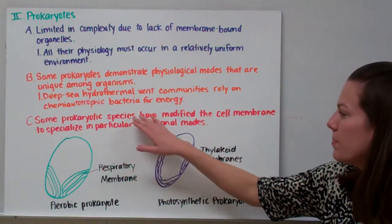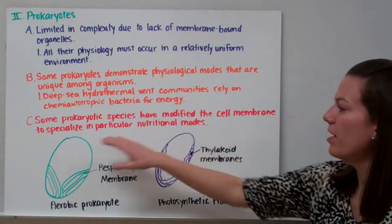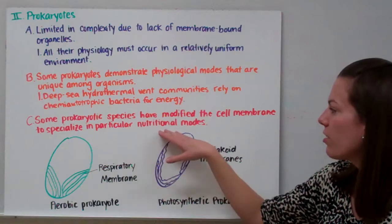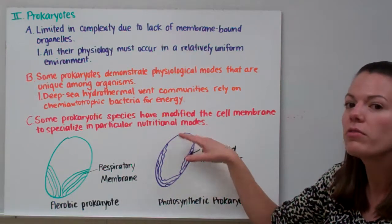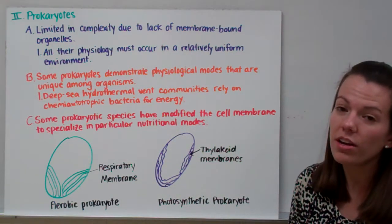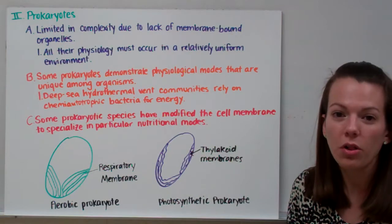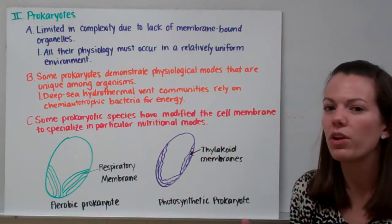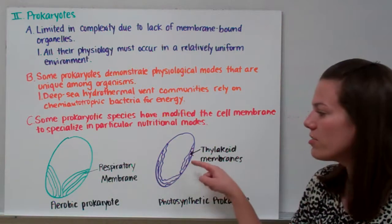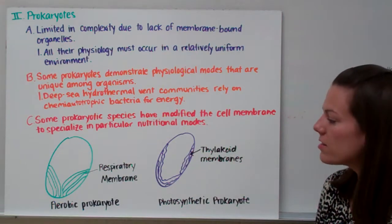Some prokaryotic species have modified the cell membrane to specialize in particular nutritional modes. While prokaryotes do not have mitochondria or chloroplasts, sometimes they have infoldings of the cell membrane so that they can carry out these processes.